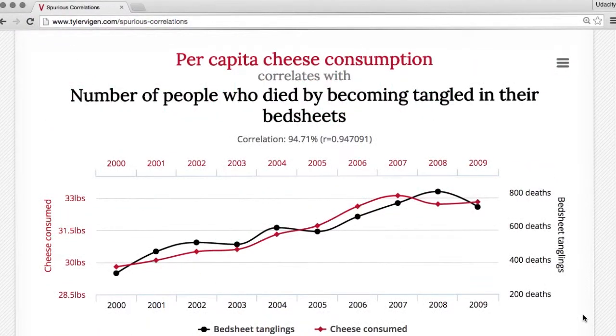To see why, let's take a look at this graph, which shows per capita cheese consumption in red and number of people who died by becoming tangled in their bedsheets in black. As you can see, these two variables are highly correlated. As one increases, the other tends to increase as well.